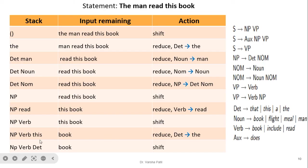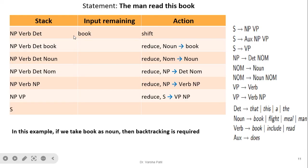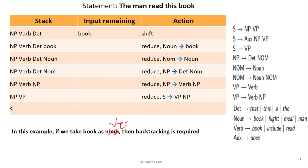After shifting 'this' as Determiner, we have NP Verb Determiner on the stack. We shift 'book' — here, for simplicity, 'book' is treated as a Noun. Noun → book, then Nominal → Noun, then Determiner Nominal reduces to NP. Now the stack has NP Verb NP. Verb NP reduces to VP, and then NP VP reduces to S — the statement is accepted. Note: if 'book' were treated as a Verb here, backtracking would be required, since in this statement 'book' acts as a noun.